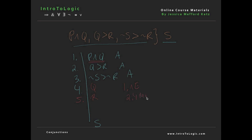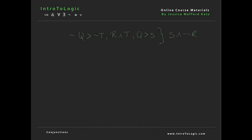Now that we have Q as a premise, we can use it combined with line 2 to derive R by modus ponens — lines 2 and 4. Now we have R, and there's an R in line 3, but it's negated in the consequent position. So we double-negate R with 5 double negation, and use that with line 3 to derive not-not-S through modus ponens. Then from not-not-S, we derive S using double negation.